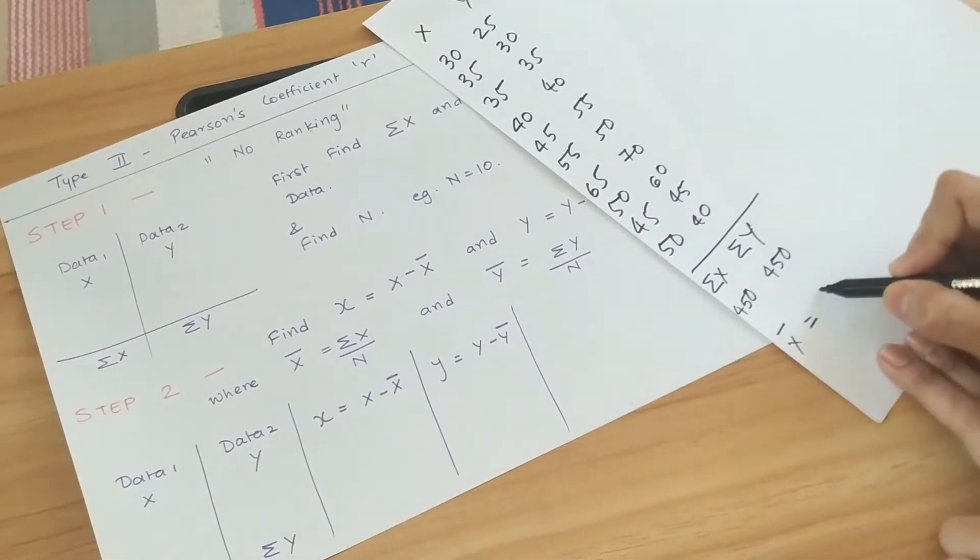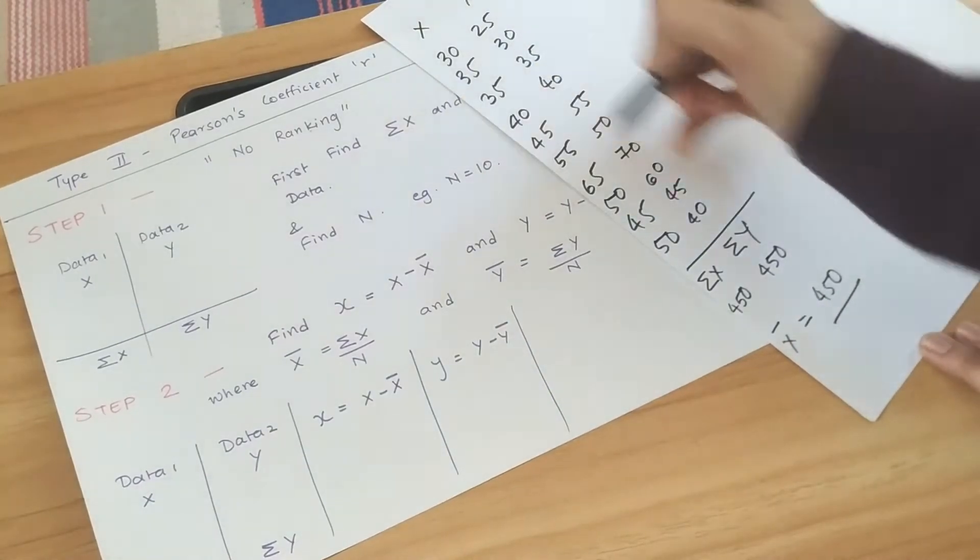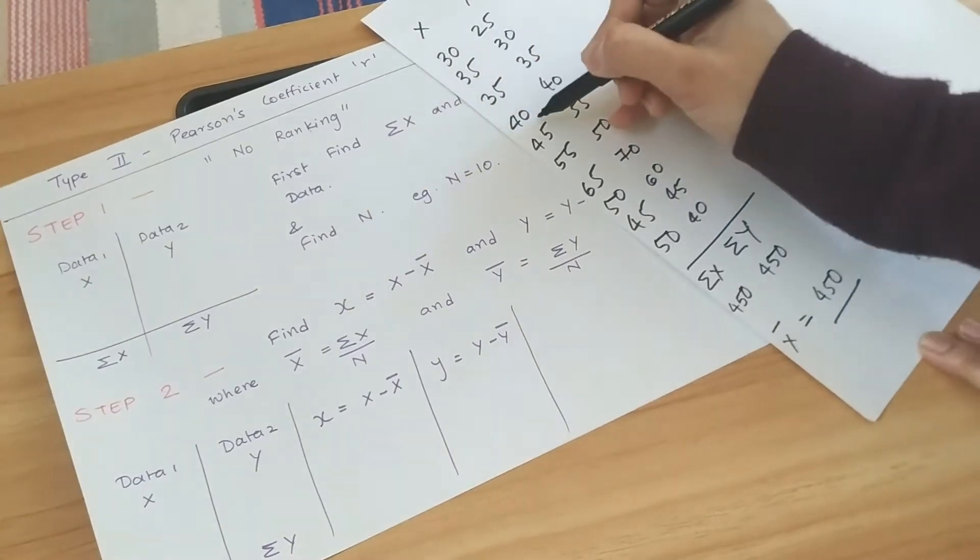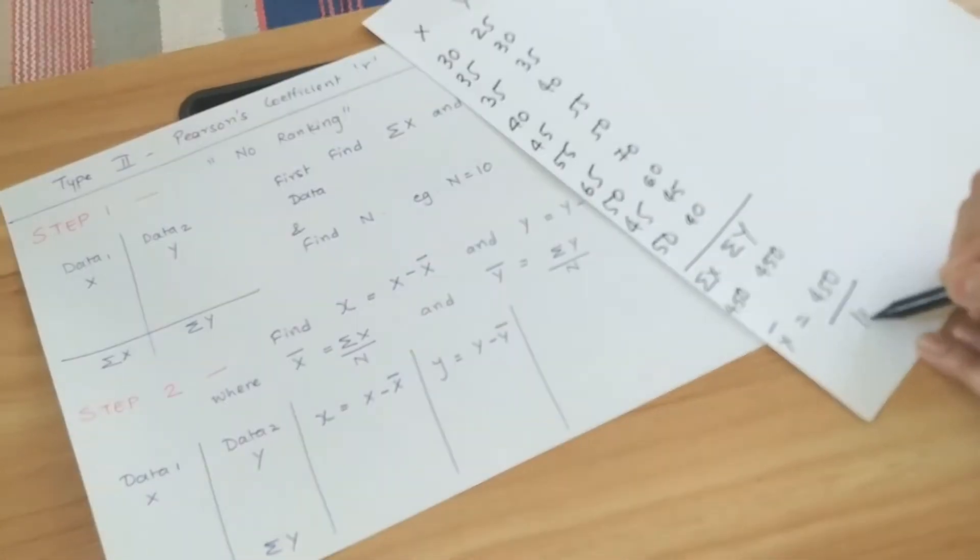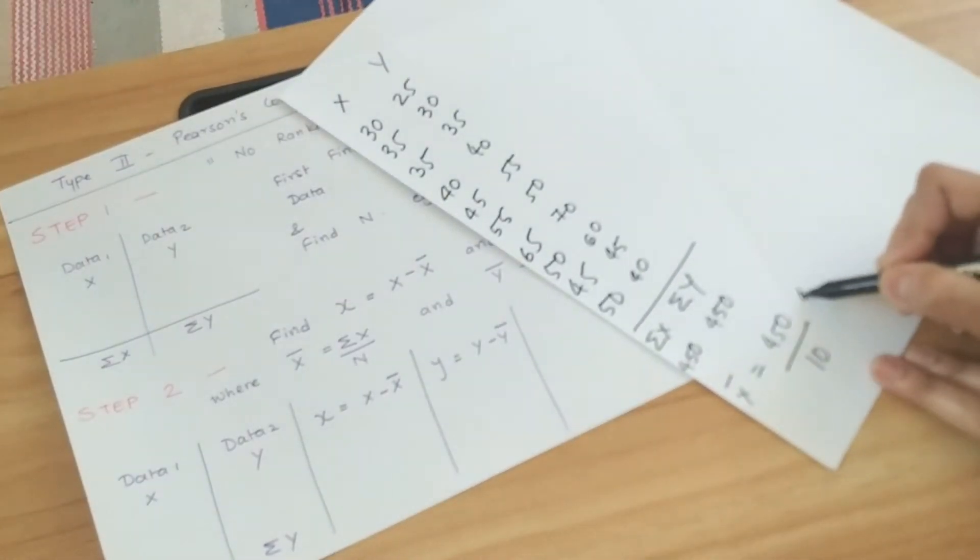So summation of x is 450. How many number of elements? There are 10 elements. So it is 450 by 10, which is 45.